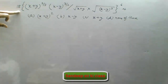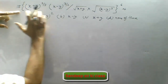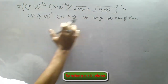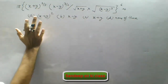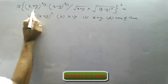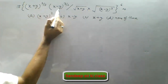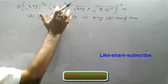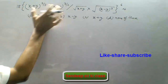Next question is question number 18. We want the value of this expression and these are the options given to us. Now see the numerator first. The numerator has the powers of x plus y and x minus y which are already there in fractions. So we will not change the numerator first.